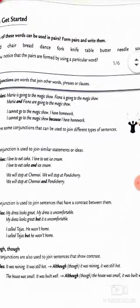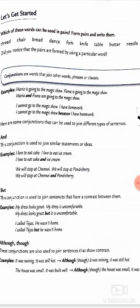Conjunctions are words that join other words, phrases, or clauses. Conjunctions are basically joining words that join two words or phrases or clauses.